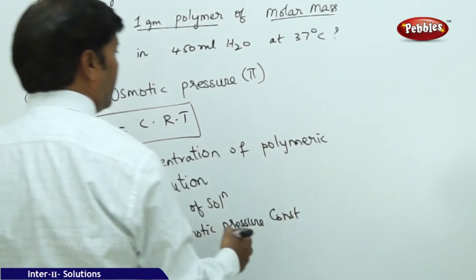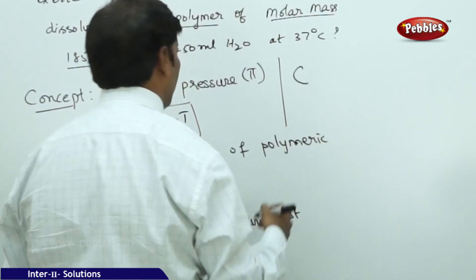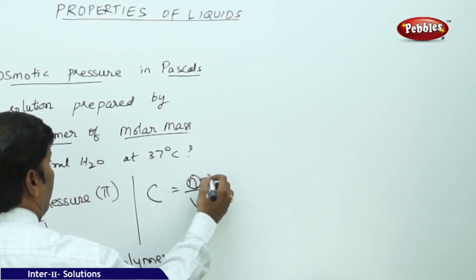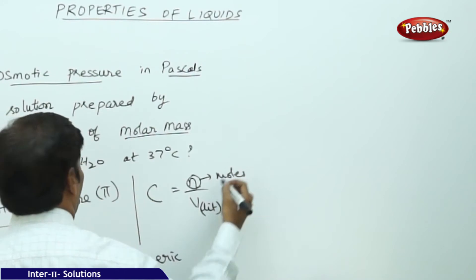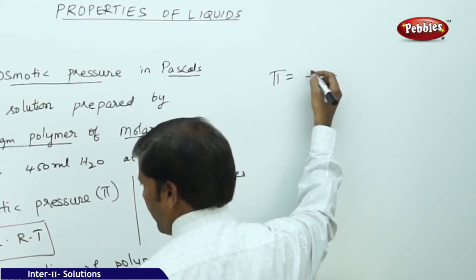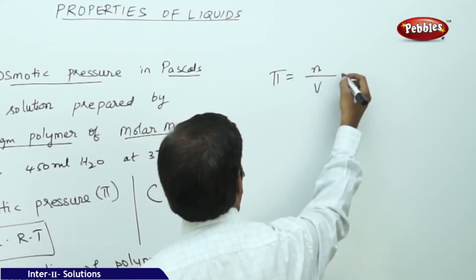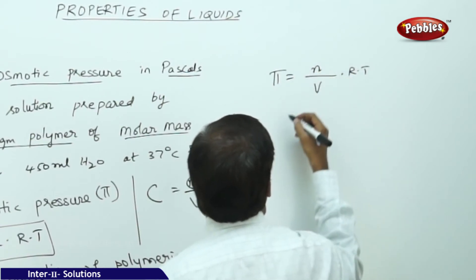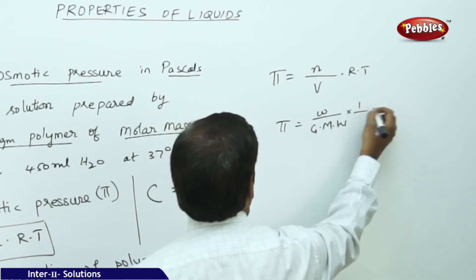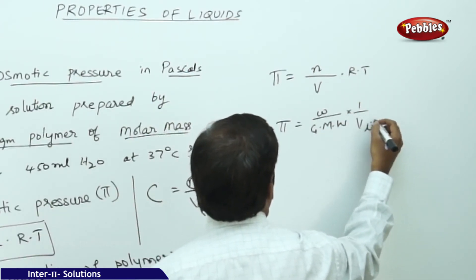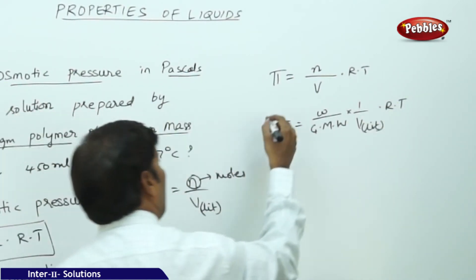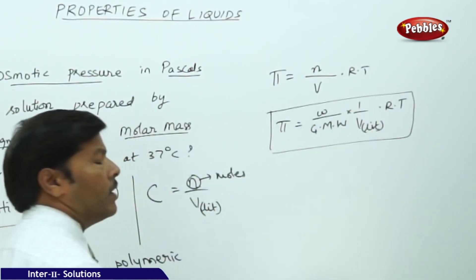Expanding the formula: π = (n/V) × R × T = (w / M) × (1/V) × R × T, where w is the weight, M is the molar mass, and V is volume in liters. This is the formula required to calculate the osmotic pressure.